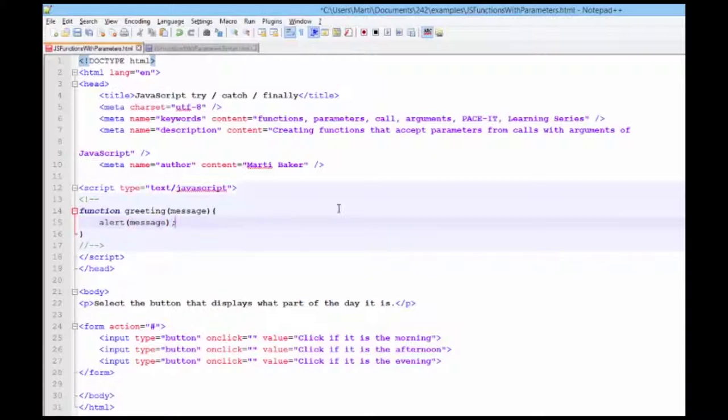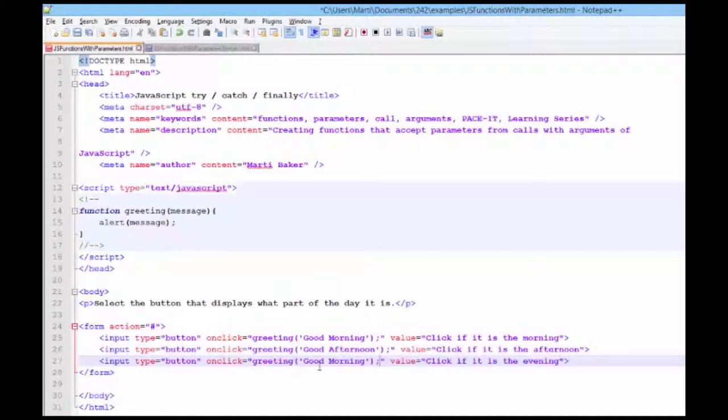Then we need to have an event that will take place and call the function. So we're going to go down here to these input buttons and we're going to have greeting with a single quote saying good morning and a single quote parentheses. Notice I'm using single quotes here because they're double quotes surrounding the on click event. Make this really easy. I'm going to copy this, paste it here, make it good afternoon, and paste it here and say good evening.